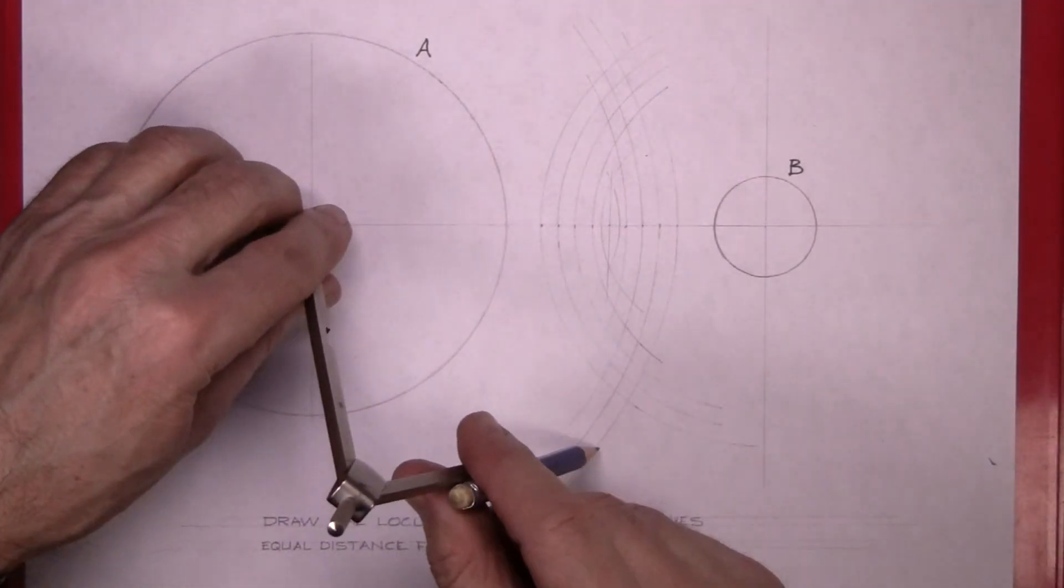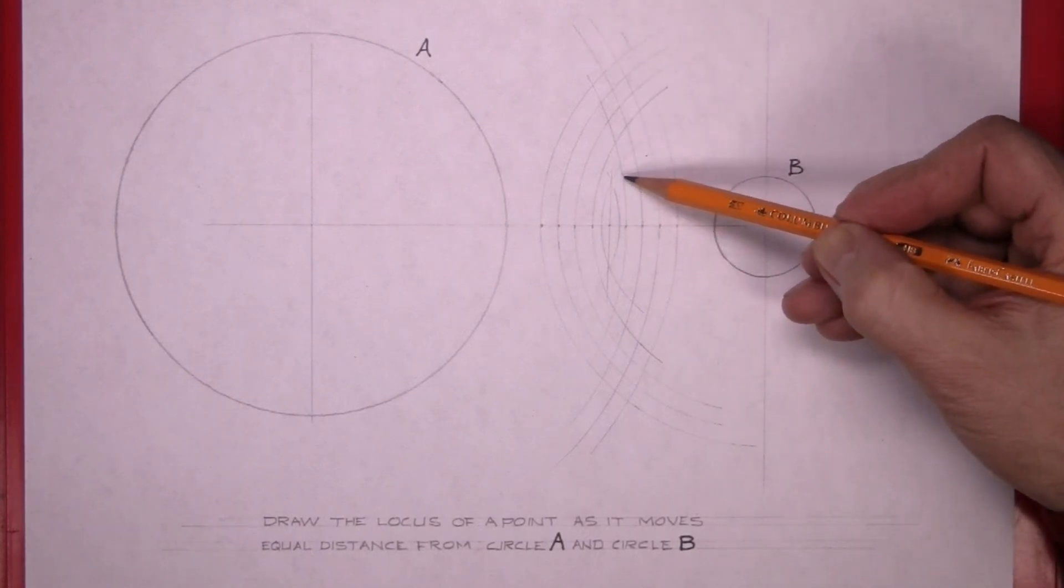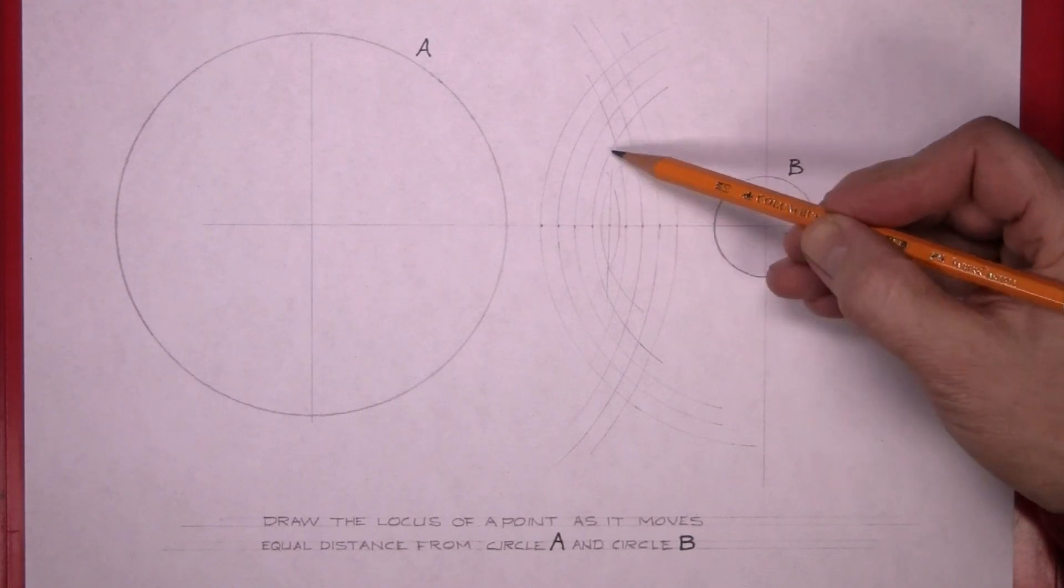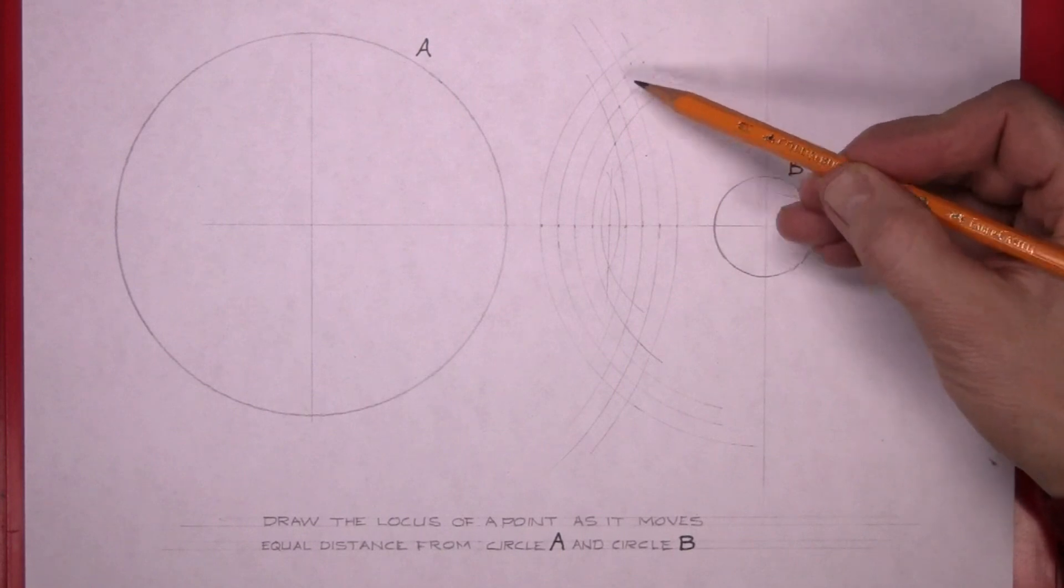Now with that done, you have the center point where this arc meets this arc here. That's one of the points on the locus and these are all points on the locus then.